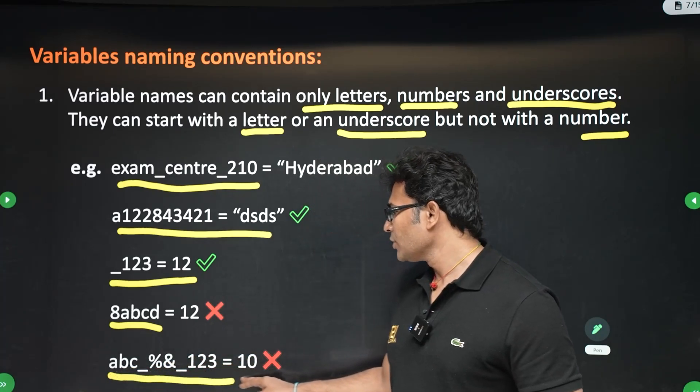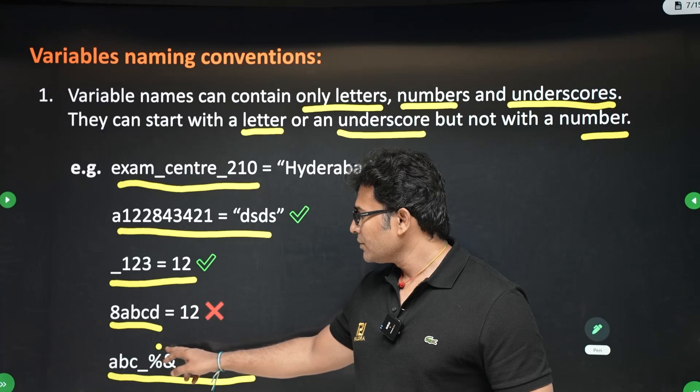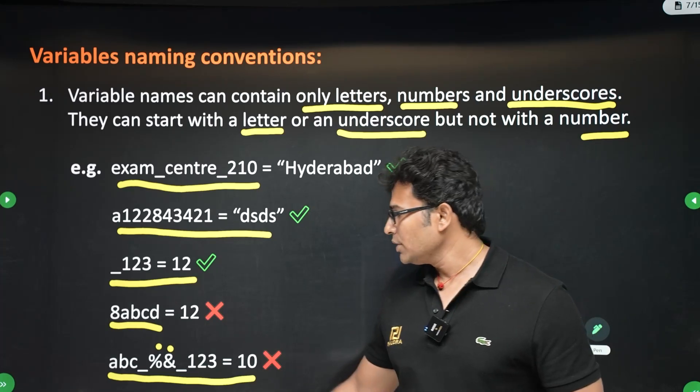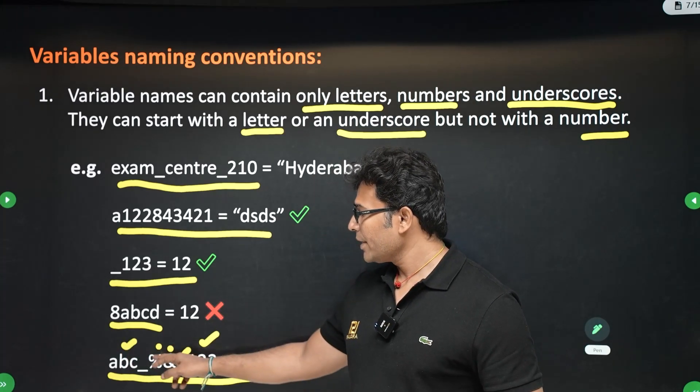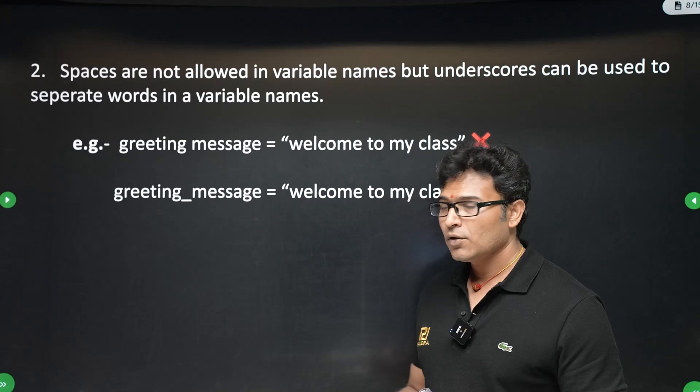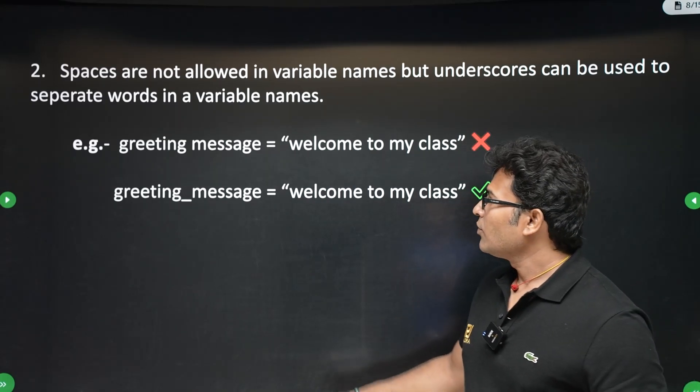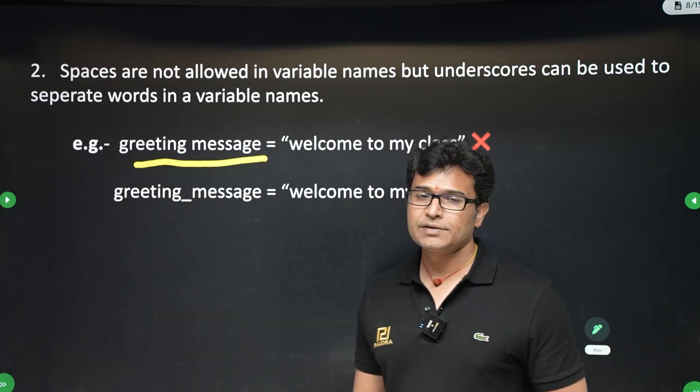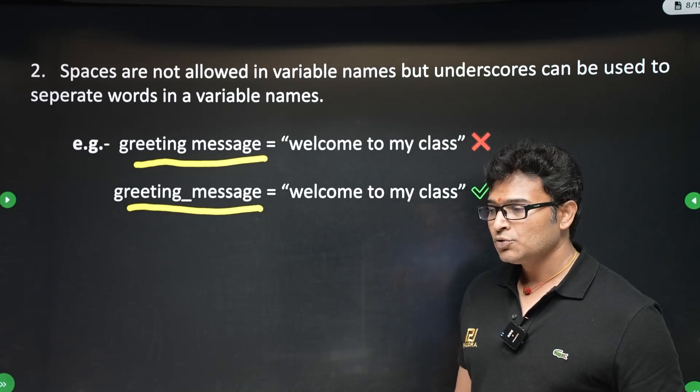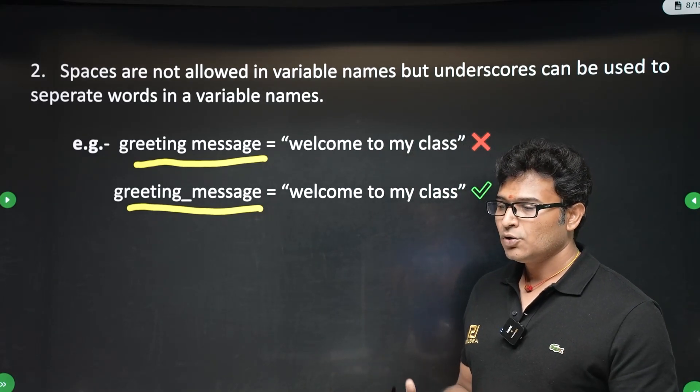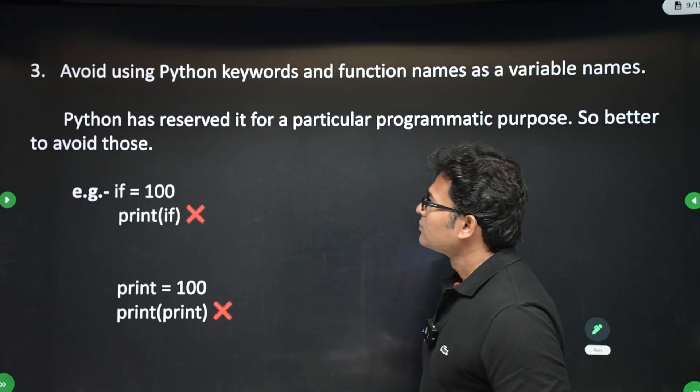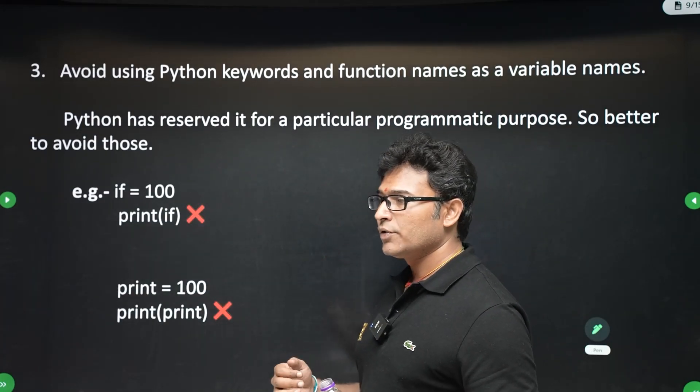Similarly, if you look at this variable name, there is ampersand, there is percentile symbol. These two are not allowed in the variable name. What are allowed? Only letters are allowed, numbers are allowed, underscores are allowed. You don't allow the special symbols. And second thing is you cannot use gaps in the variable name. For example, you cannot write like this: greetings space messages. But you can put an underscore and you can write like this. So don't use gaps, use underscores. Whenever there are two or more words in the name of a variable, you separate them by using underscores.